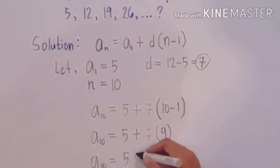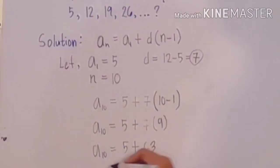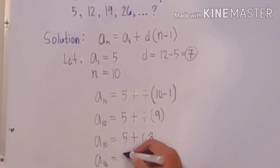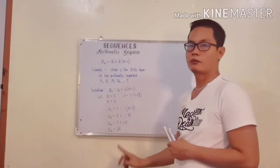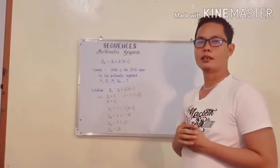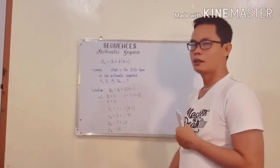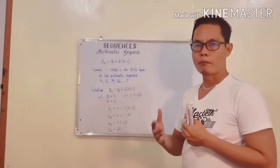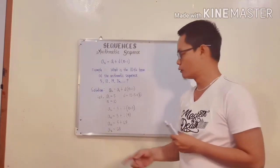We have 7 multiplied to 9 - simplification of 10 minus 1 is 9. a₁₀ equals to 5. What's the value of 7 multiplied to 9? 63. So final answer for that, a₁₀ equals to 68. That's the value of the 10th term. Now marami sa atin ang hindi sigurado - how sure we are that the value of a₁₀ or the 10th term is 68?